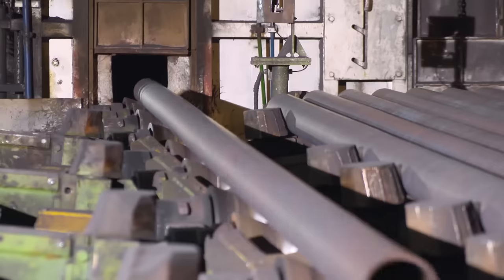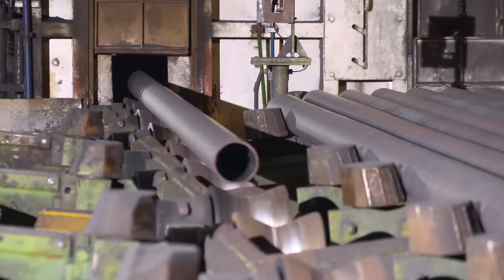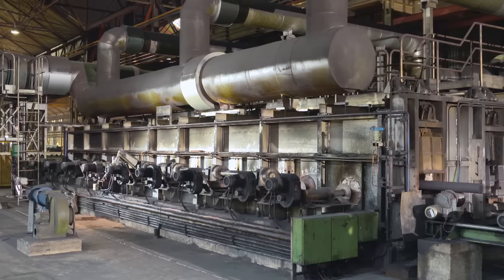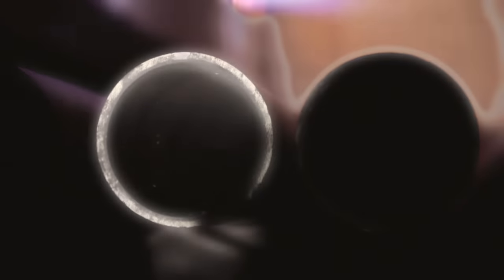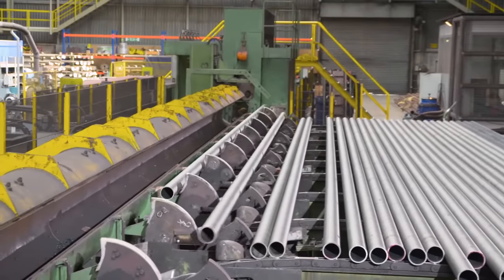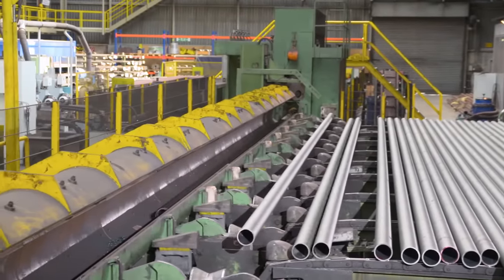In the tempering furnace, the hardened tubes are heated to a specific temperature and held at this temperature for a defined length of time. This leads to the required steel grade. The heat treated tubes are straightened in rotary straightening machines.